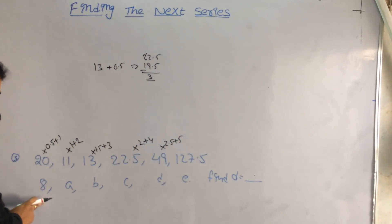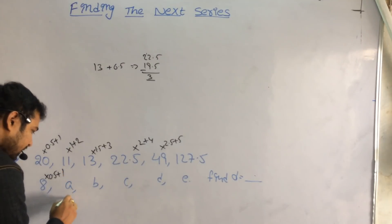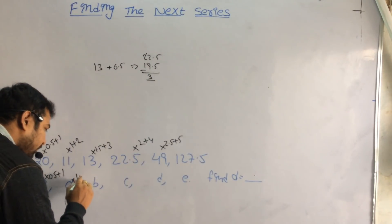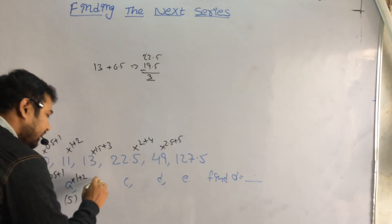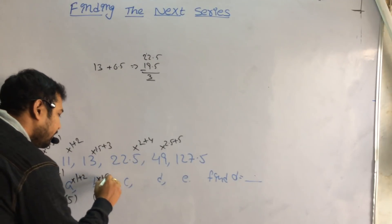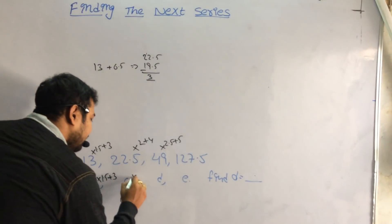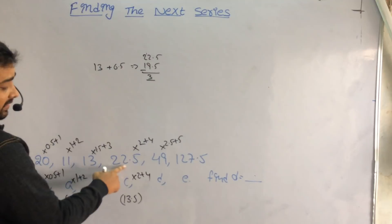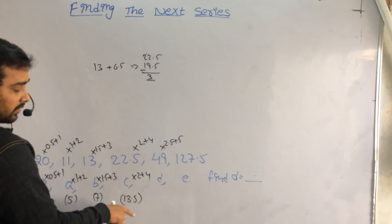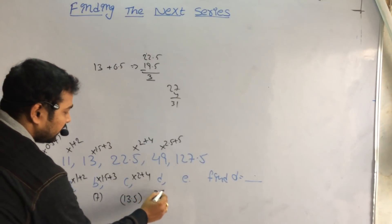We apply the same logic to the given number 8. 8 multiplied by 0.5 is 4, plus 1 is 5 — so A is 5. Then 5 multiplied by 1 is 5, plus 2 is 7. Then 7 multiplied by 1.5: 7 plus 3.5 is 10.5, plus 3 is 13.5. Then into 2 plus 4: 13 into 2 is 26, plus 1 is 27, plus 4 is 31. So the value of D is 31.